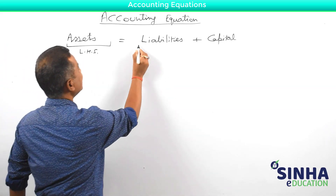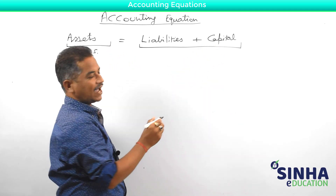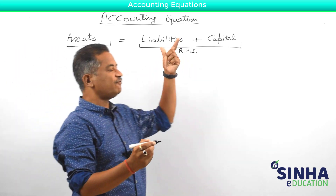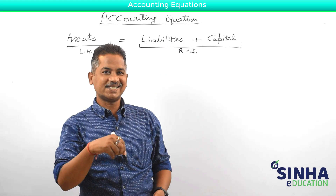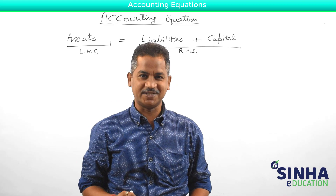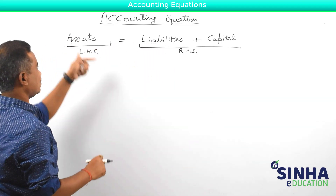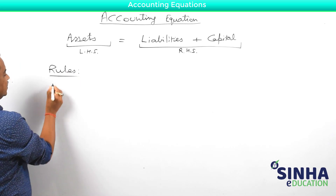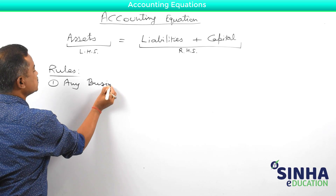This certifies that at any point of time, the total value of all assets marked on the LHS must always equal the total value of liabilities plus capital on the RHS. This truth will be proved by taking numeric examples. But before going to those numerics, let's learn the basic rules.